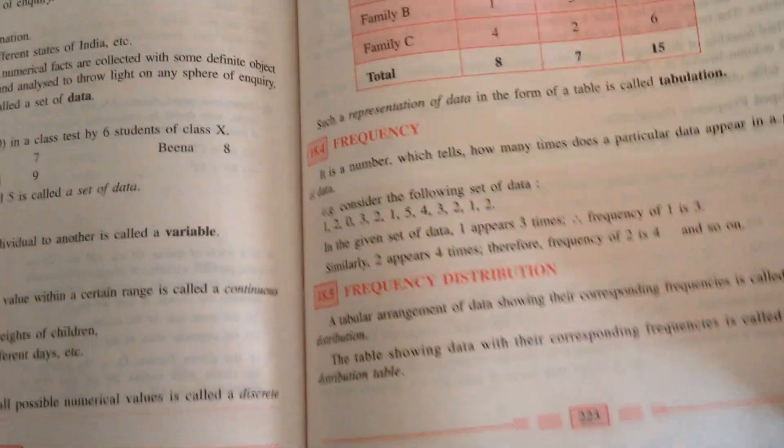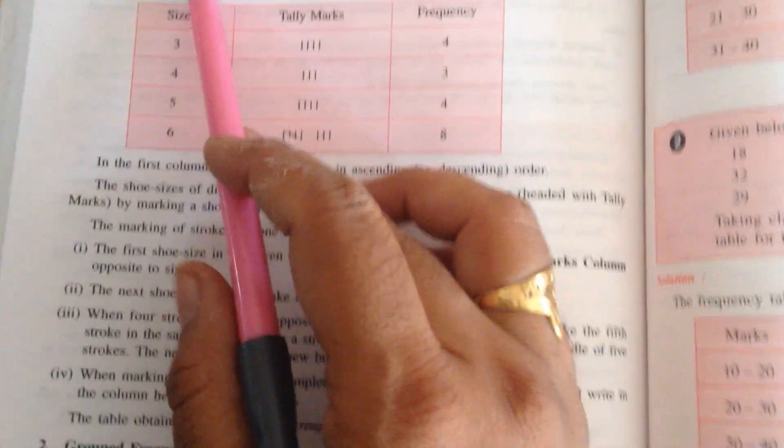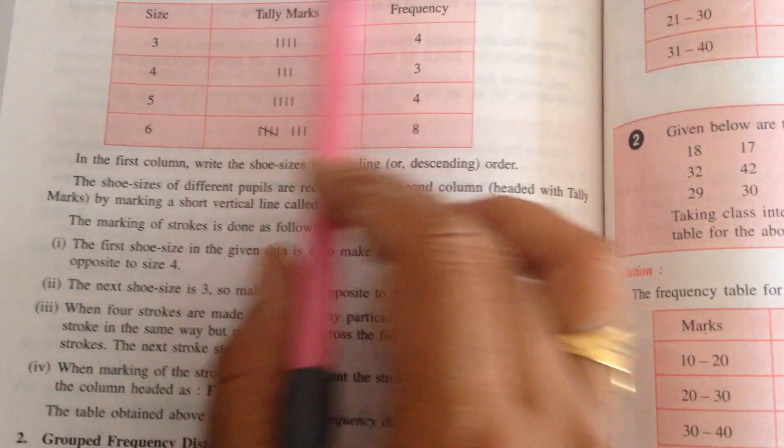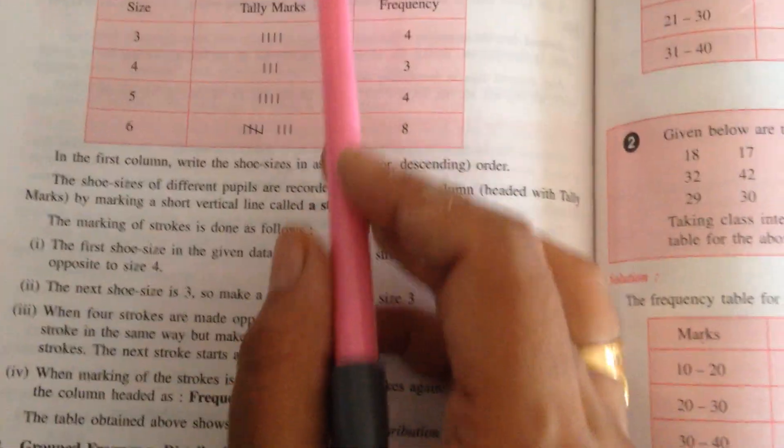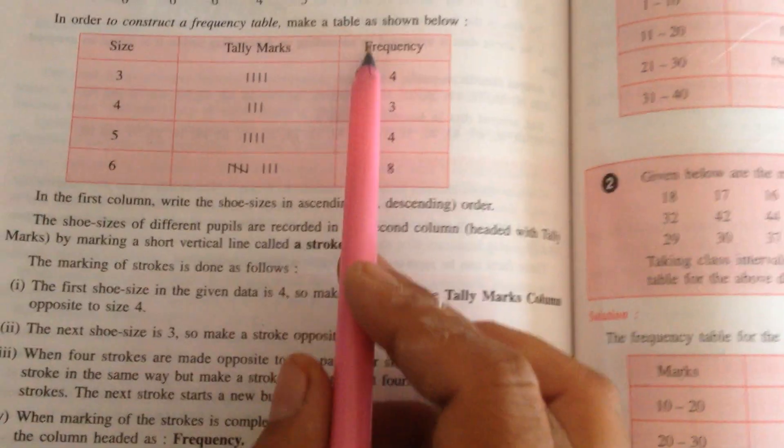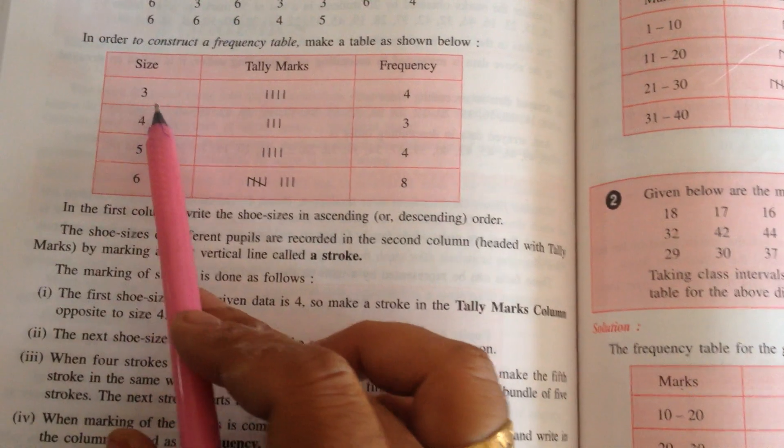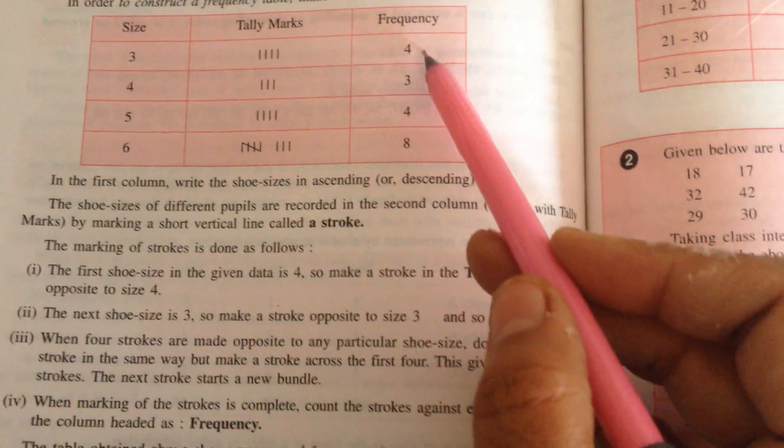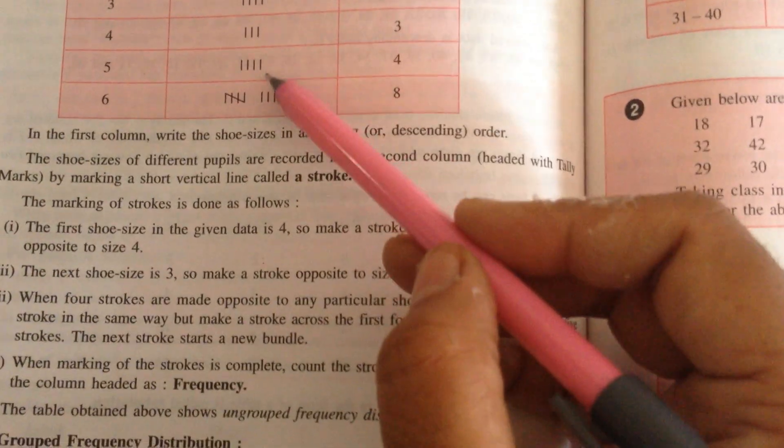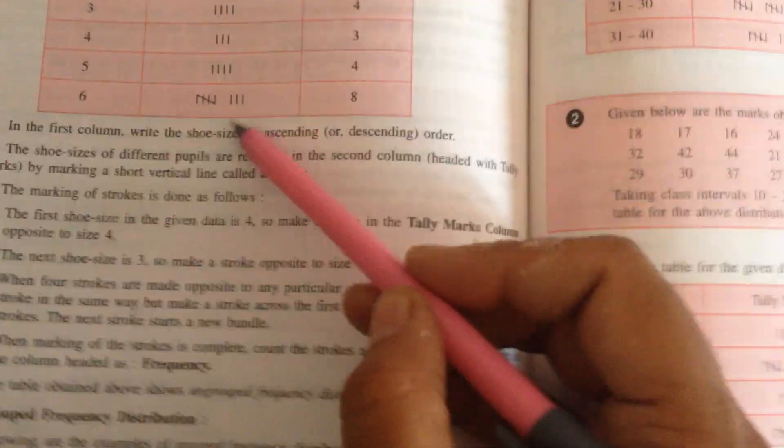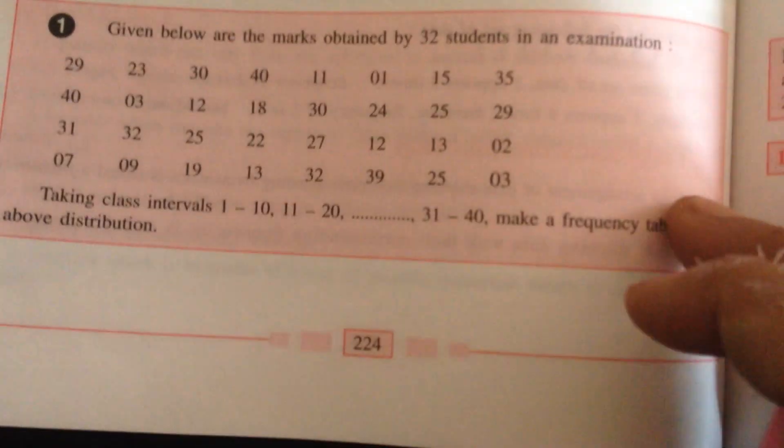Then ungrouped data. Suppose any number is written here, you will have to choose the number, then you have to count how many times this number occurred. Then you will arrange in a table. This is known as tally marks. You already know about this. Ungrouped frequency table.